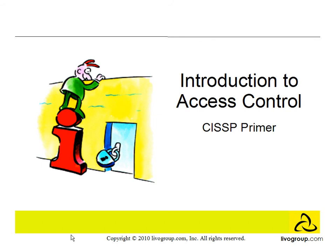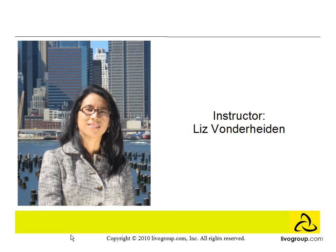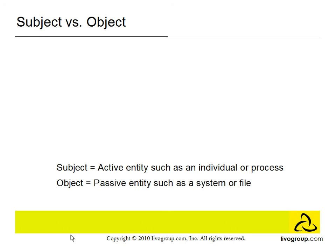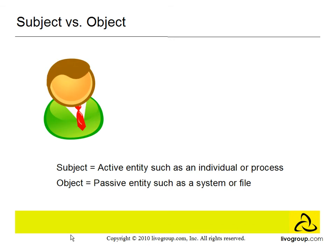Welcome to the introduction to Access Control. I am Liz von der Heiden. Access Control is the ability to permit or deny the subject access to an object. A subject is an active entity such as an individual or a process, and an object is a passive entity such as a system or a file. For example, you as a user accesses a file in a computer.